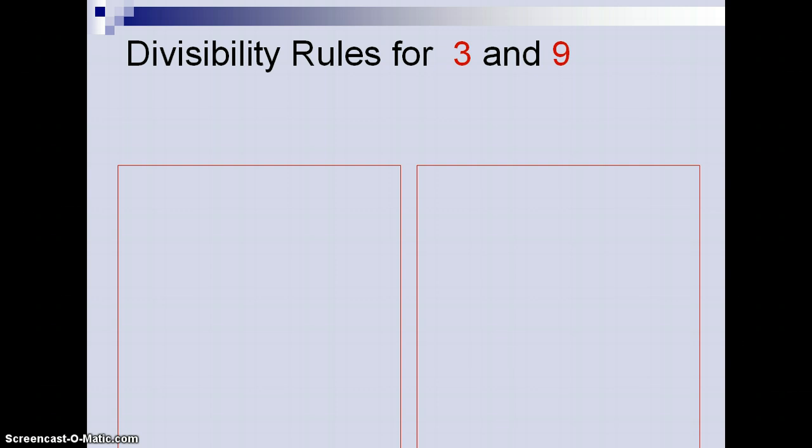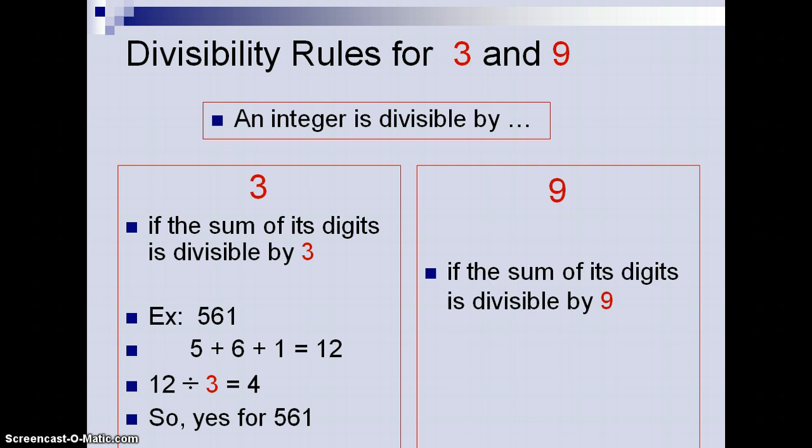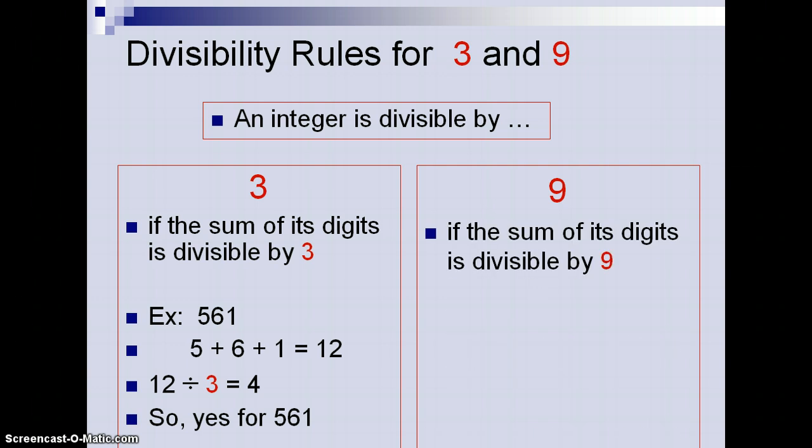The divisibility rules for 3 and 9 are listed here. If we can divide by 3, we would take the sum of all the digits and make sure the answer is divisible by 3. An example would be 561, and if I add all those digits up, I get 12, and 12 is divisible by 3. For 9, it's similar. We sum up the digits and see if it's divisible by 9. In this example, the digits add up to 18, and 18 is divisible by 9.